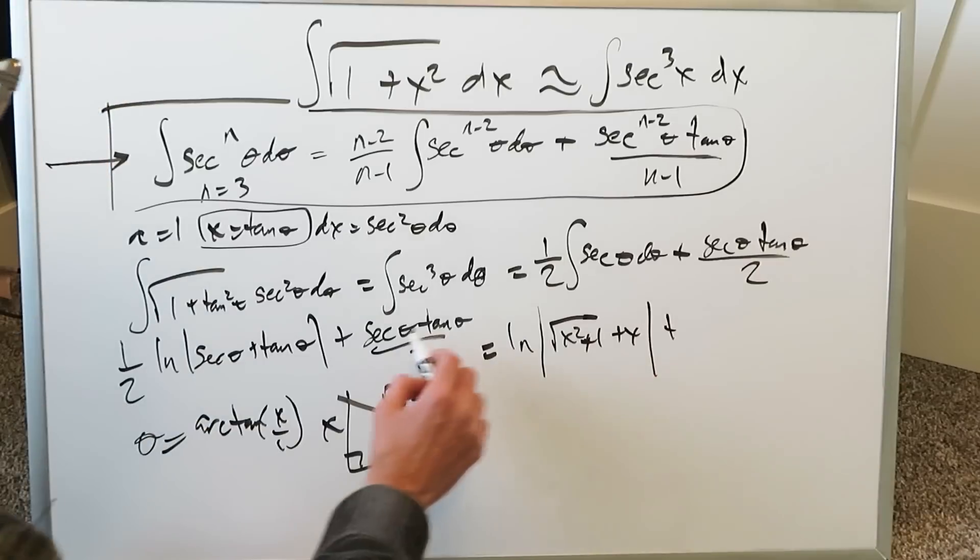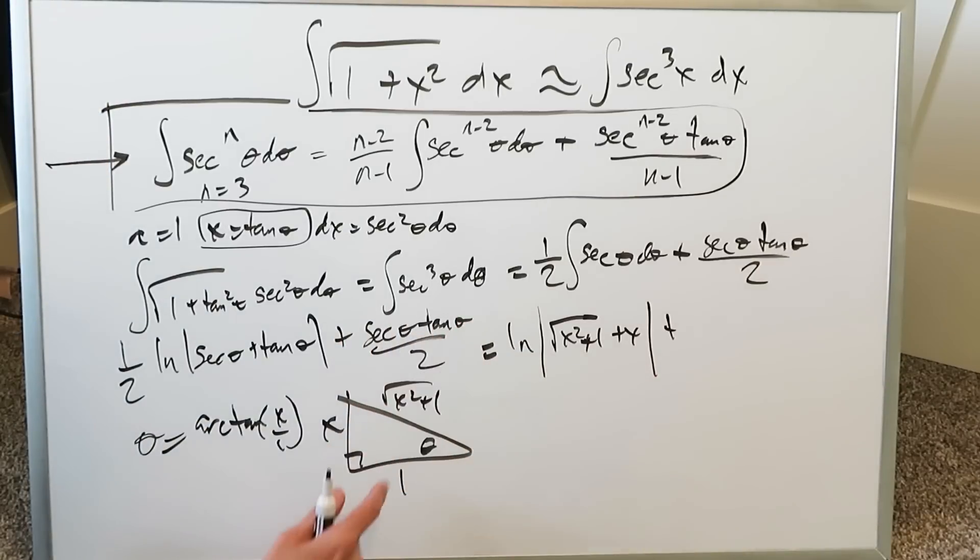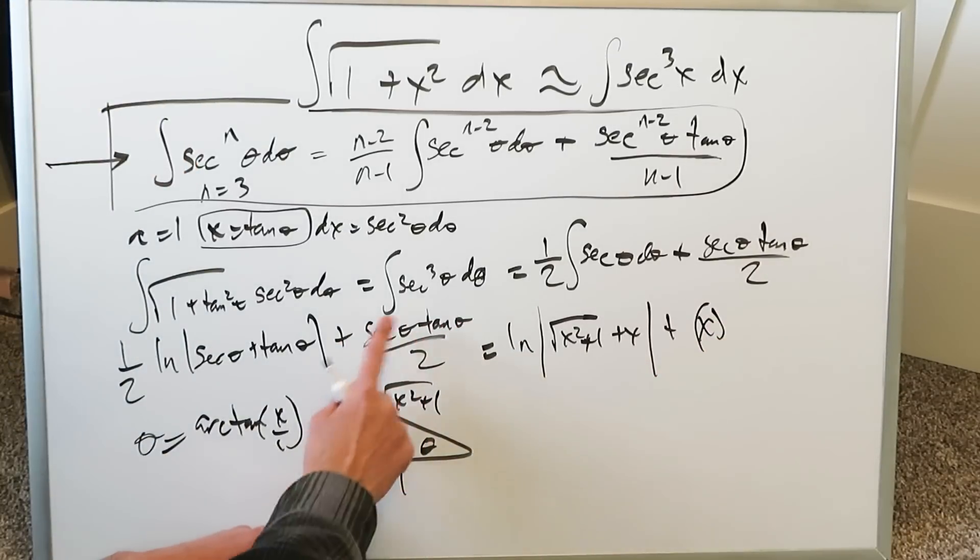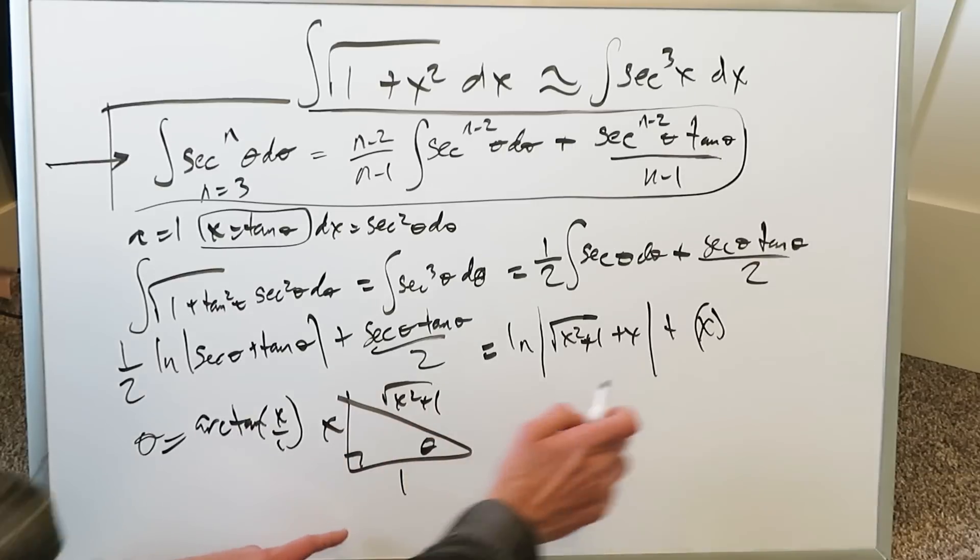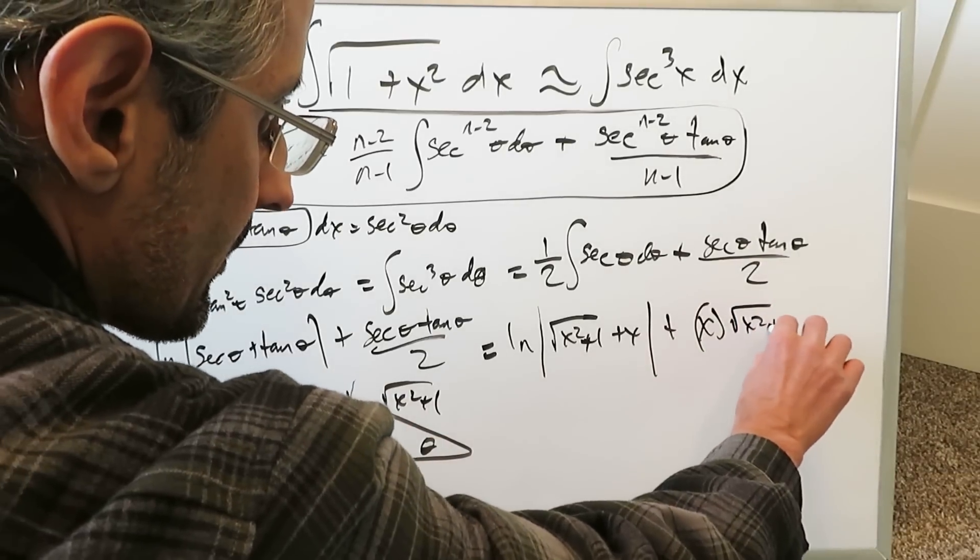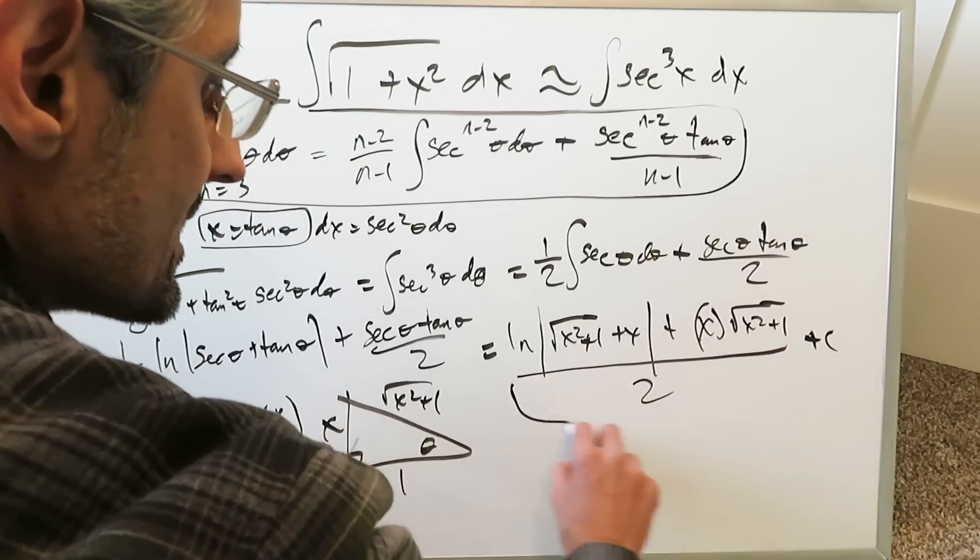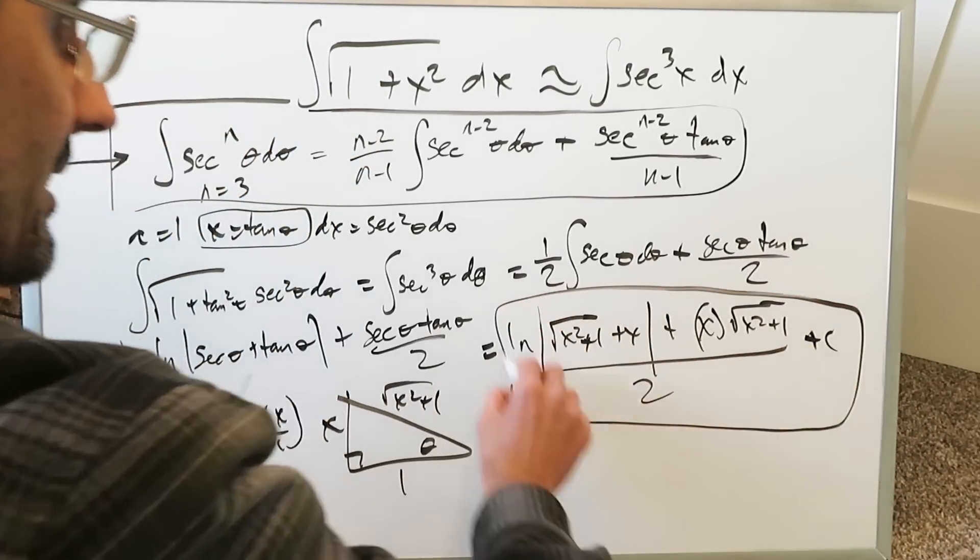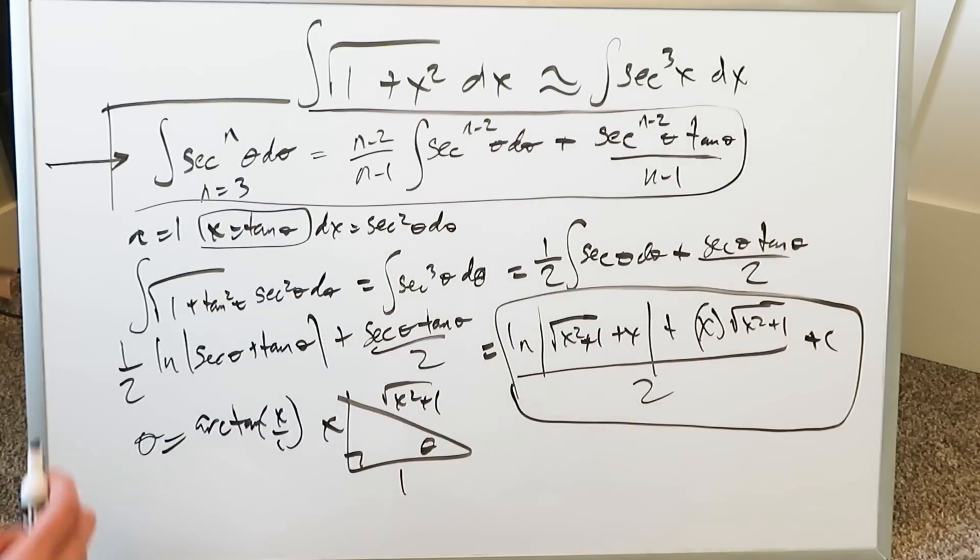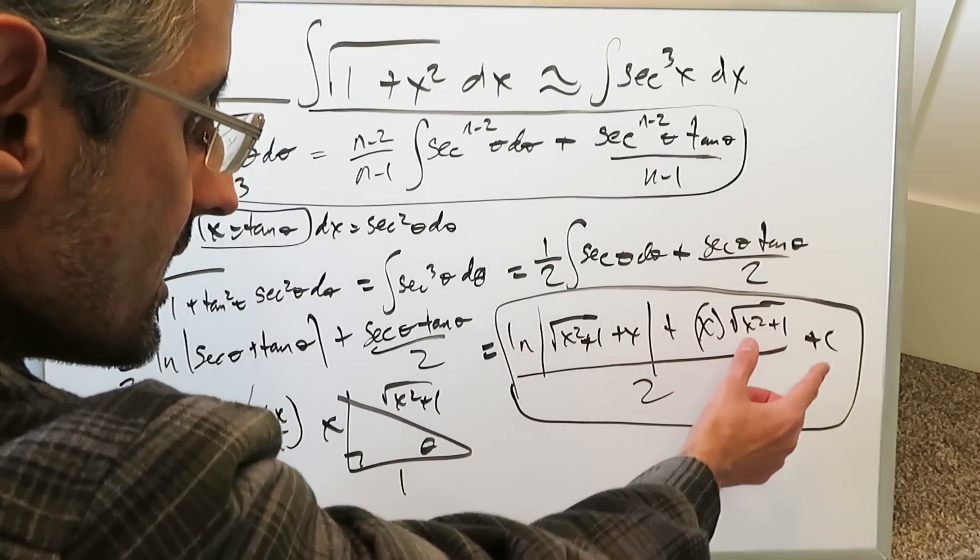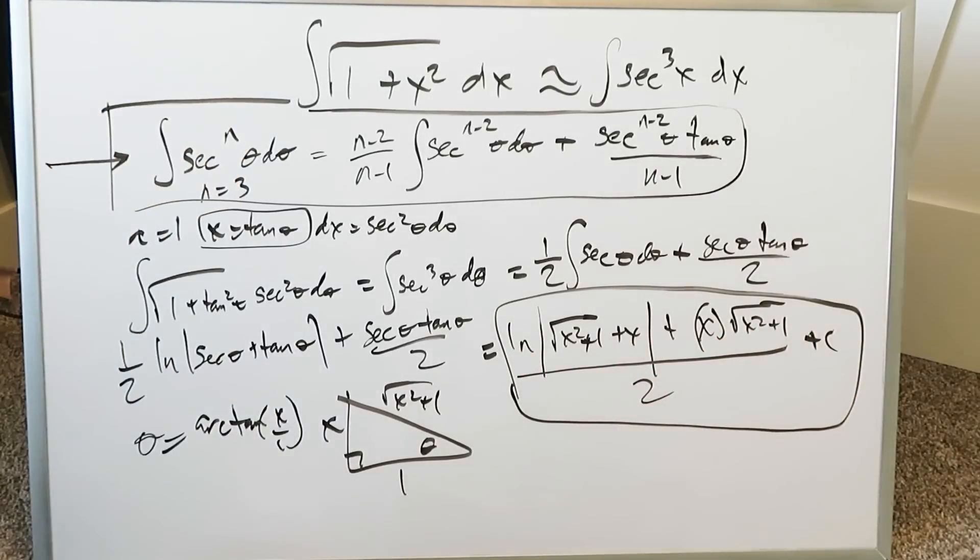Then you have this plus secant theta times tan theta in a product relationship. Tan theta is just x. Secant theta with regards to this is square root of x squared plus 1, and all of this is over 2 plus c. Here is your antiderivative for this which is the same thing as the antiderivative for that: natural log absolute value square root of x squared plus 1 plus x, close the absolute value, plus x square root of x squared plus 1, all divided by 2 plus c, and the question has been done.